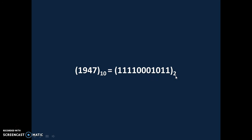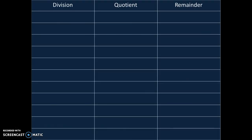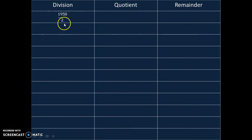We will take one more problem to understand this concept. Problem No. 2. The Indian Constitution came into force in the year 1950. Convert this decimal number into binary number system. Once again we will require a table with 3 columns: division, quotient, remainder. We are dividing by 2 because we want to convert 1950, given in decimal, into binary, and the base of binary number system is 2.